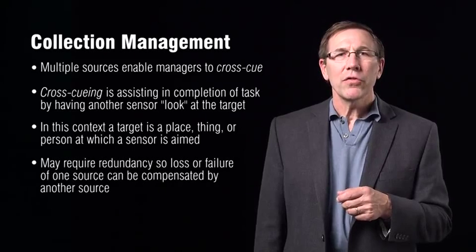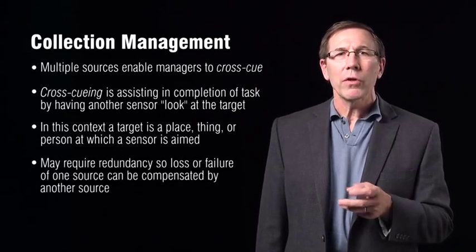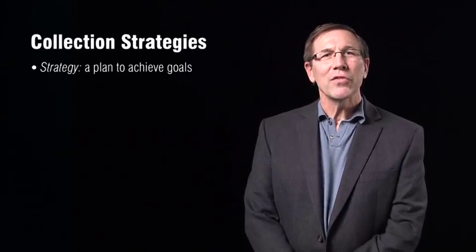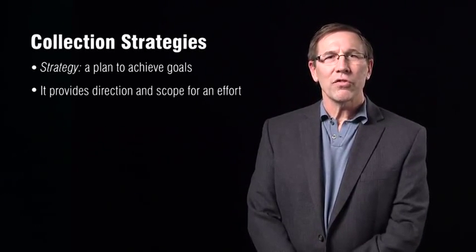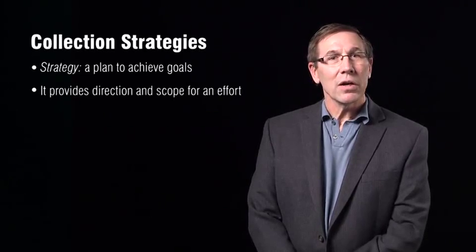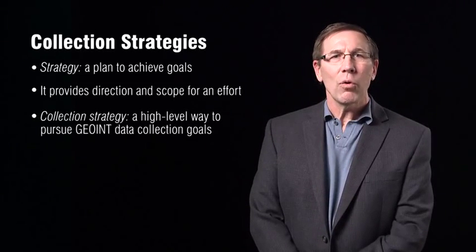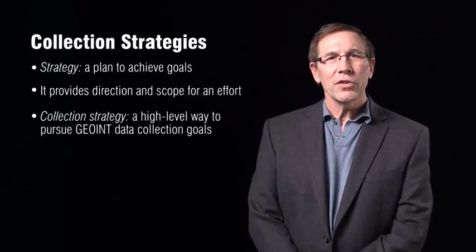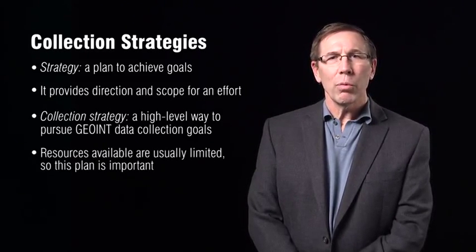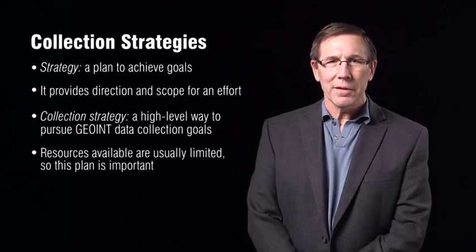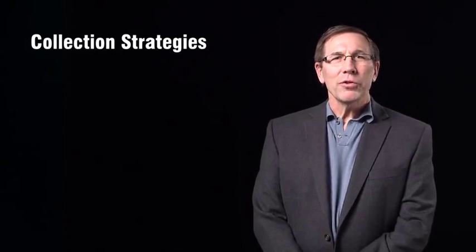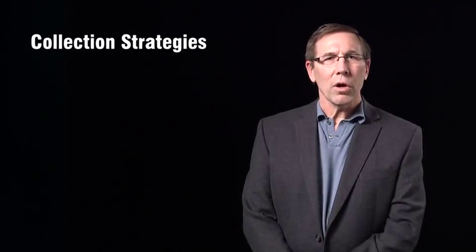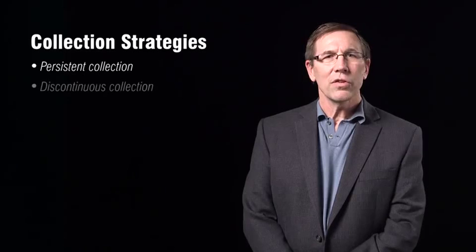Collection may also require redundancy so that loss or failure of one source can be compensated by another. A strategy is a plan to achieve goals — it provides direction and scope for an effort. Collection strategy is used to denote a high-level way to pursue GEOINT data collection goals, and is important because the resources available to achieve goals are often limited. We have artificially divided the continuous strategies into two categories: persistent collection and discontinuous collection.